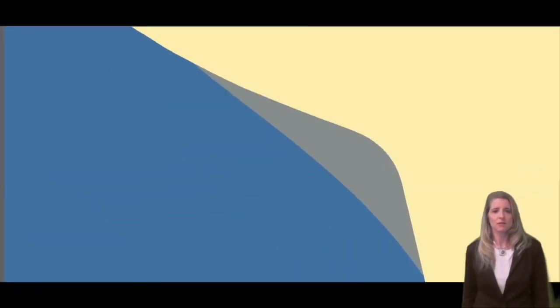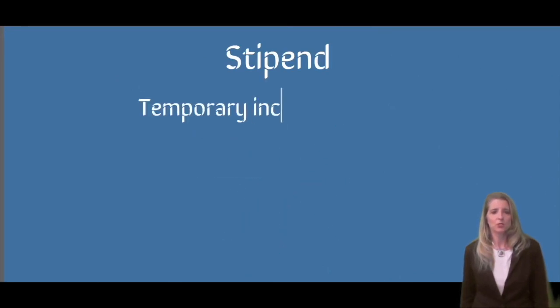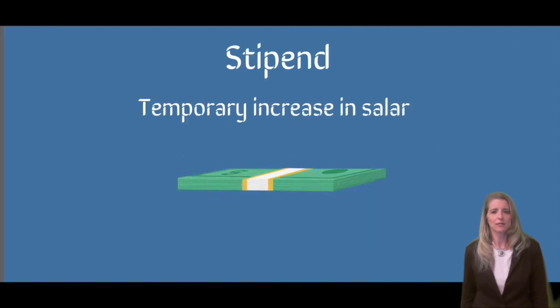The third action is a stipend. A stipend is a temporary increase in salary — a method of compensation used to recognize individuals for temporarily performing responsibilities of a vacant, higher level position or other significant additional duties which are not part of the employee's regular position. Stipends are temporary in nature and generally would not last more than a few months.